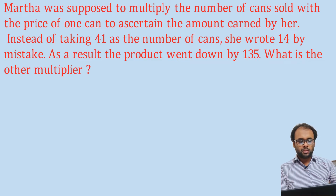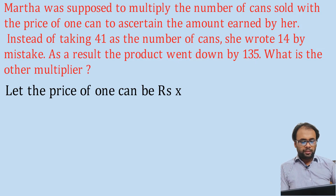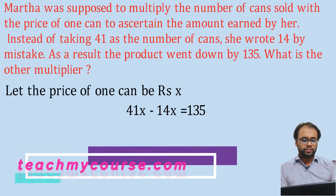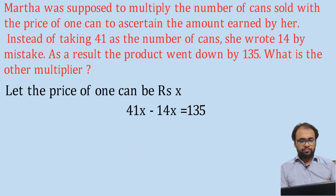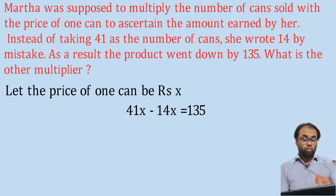Let the price of one can be rupees X. The total amount would be the number of cans multiplied by the price of one can. The actual total price would have been 41X, but she used 14, so she multiplied the price by 14, getting 14X. The difference between 41X and 14X is 135, because the product went down by 135 because of this mistake.